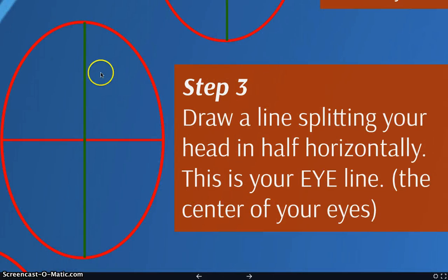Alright, step three. This time you're going to draw your line halfway vertically. So we're pretty much dividing this into four big equal pizza pieces. This is your eye line. Your eyes are halfway down your head. An easy way to remember this is always leave room for your brain. Because what's up here, not just your forehead, but your brain. Your brain sits above your eyes and all of your facial features. Your facial features are only in the bottom half of your head.